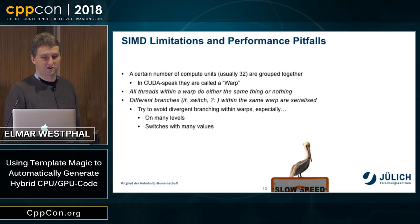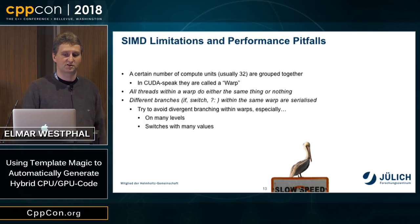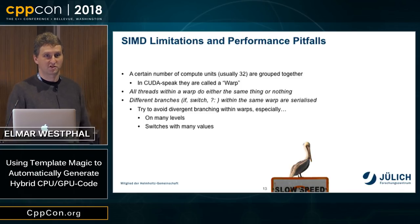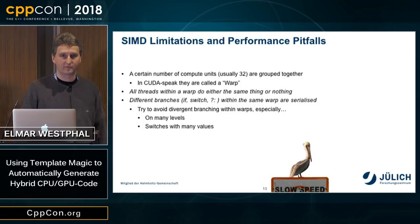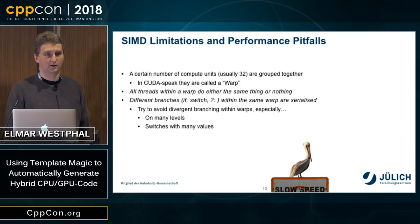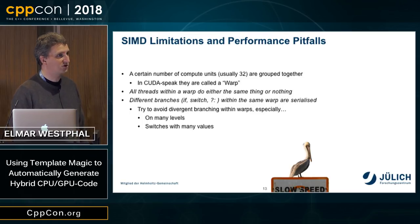The SIMD architecture has limitations. A certain number of threads execute in lockstep — in CUDA these are called a warp, typically 32 threads. They all do the same instruction, or those that don't want to participate simply do nothing. This means branching code serializes, which you want to avoid — especially with switches driven by more or less random values not dependent on thread ID.